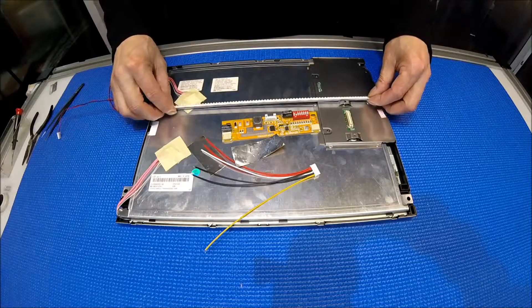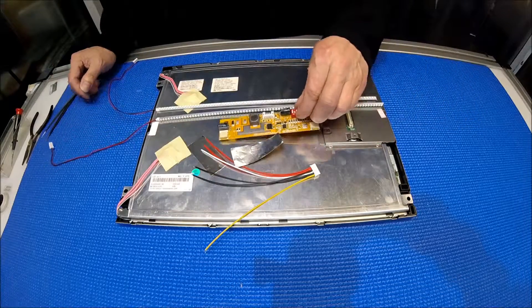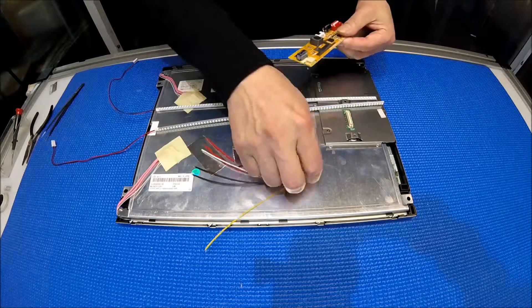This kit comes with two LED strips, a couple of aluminum foil, LED driver, and one wire harness.